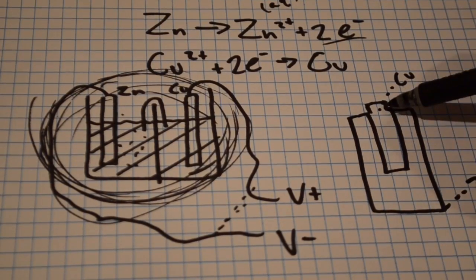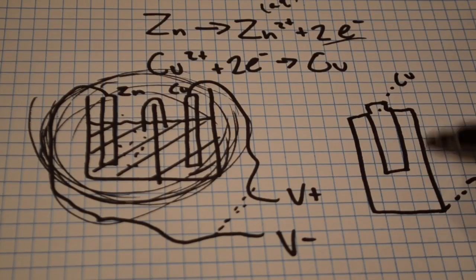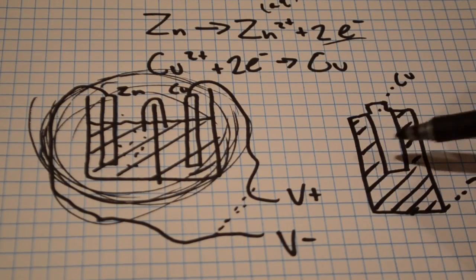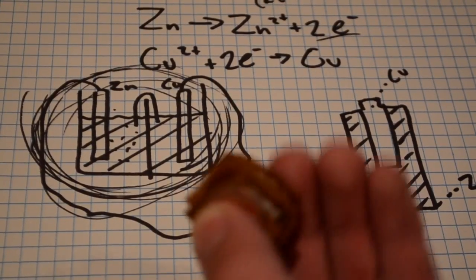Batteries that you see like this work on the same premise. The positive side will have a copper rod going down, while the inside cover is going to be coated in zinc. In between the copper and zinc, rather than a liquid, it's going to be a paste that does the same effect. And so using this process, we're able to create the battery.